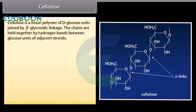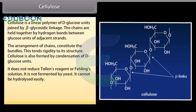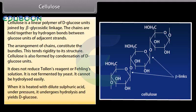Cellulose is a linear polymer of D-glucose units joined by beta-glycosidic linkage. The chains are held together by hydrogen bonds between glucose units of adjacent strands, and this arrangement constitutes bundles which lend rigidity to its structure. Cellulose is also formed by condensation of D-glucose units. It does not reduce Tollens' reagent or Fehling's solution. It is not fermented by yeast and cannot be hydrolyzed easily. When heated with dilute sulfuric acid under pressure, it undergoes hydrolysis and yields D-glucose.